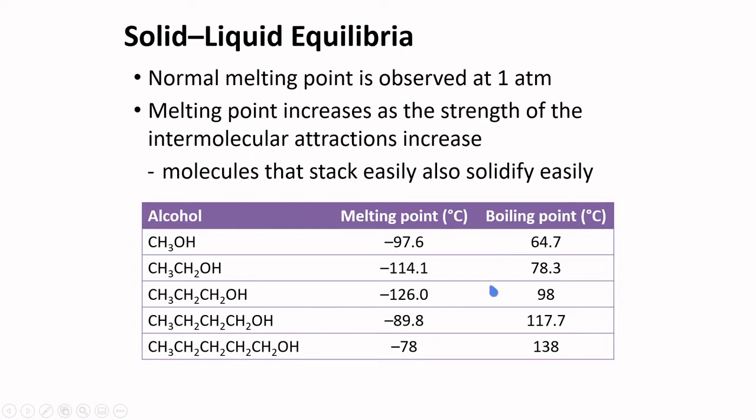This unusual downtrend can be attributed to the stacking or packing of the solids. Propanol is probably packed less efficiently compared to methanol, so it can easily melt. The non-polar carbon chain disrupts the hydrogen bonding network as the solid is formed. As more carbons are added, intermolecular attractions increase, which are related to the increase in molar mass. And they become dominant, increasing the trend in melting point.